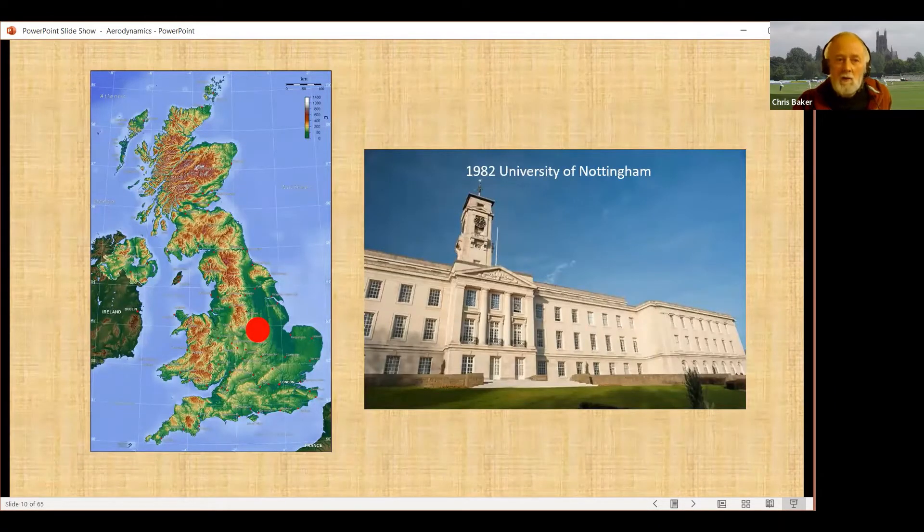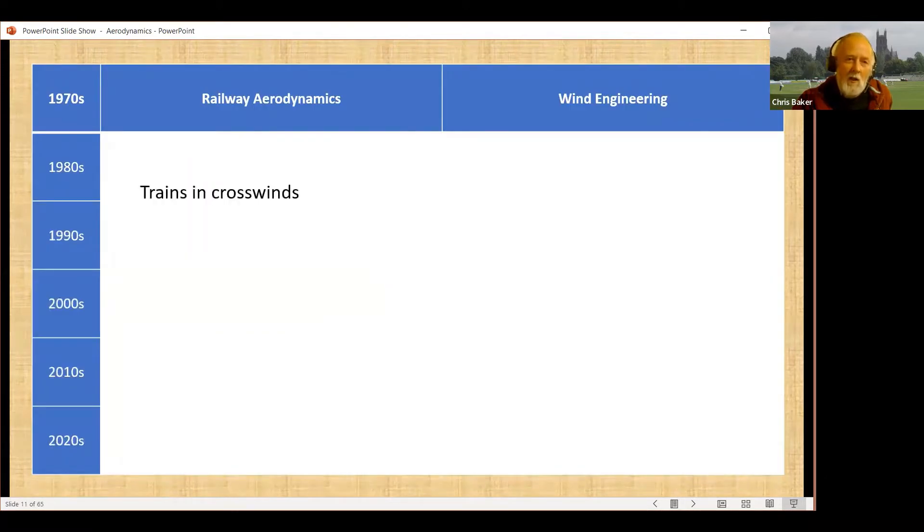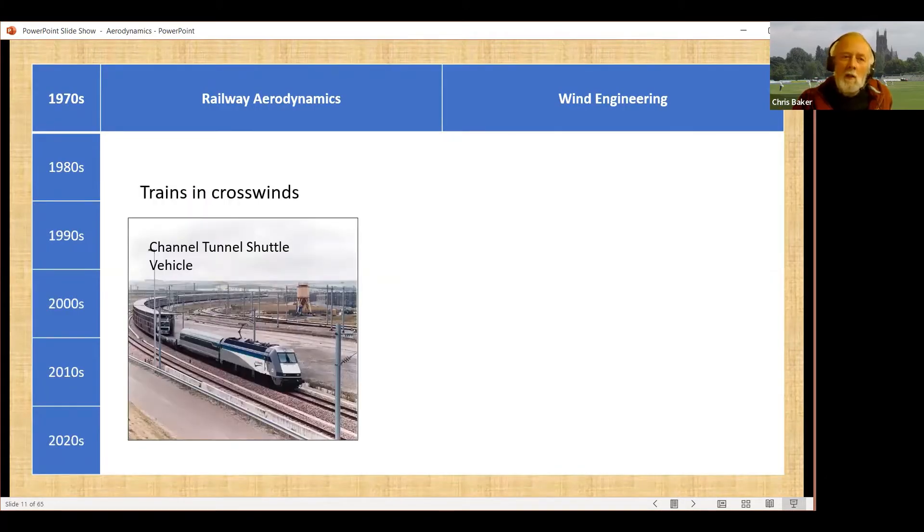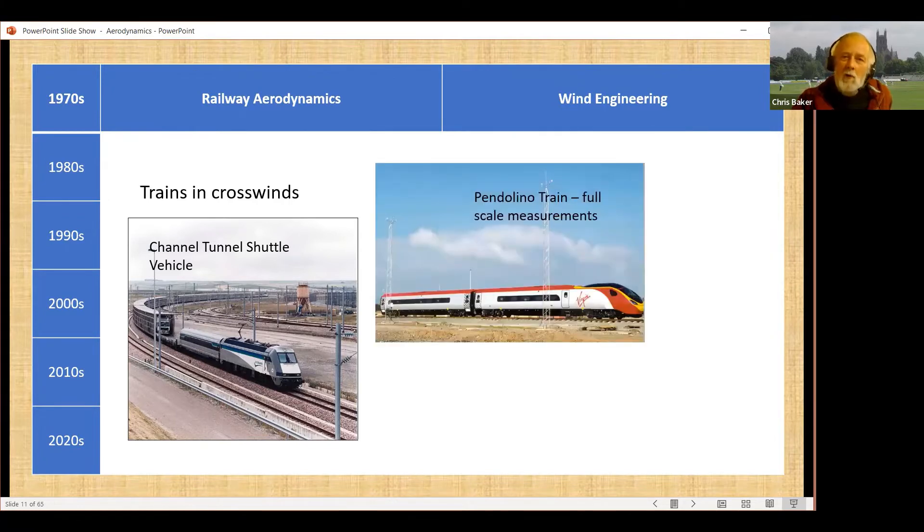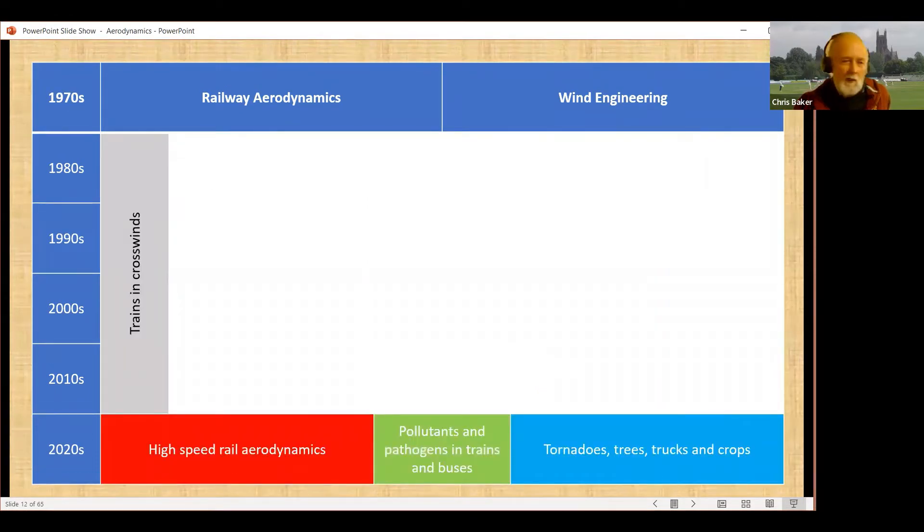In 1982, I moved to the University of Nottingham, a little to the west of Derby. There I kept that research on trains in crosswinds going, looking at the aerodynamics of the shuttle vehicles running between Britain and France, which are in danger of blowing over in the ports, looking at the more modern Pendolino train and doing some wind tunnel tests. But that is the first strand of my research, so that's been going since the 1980s, really.